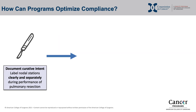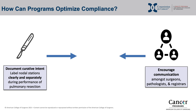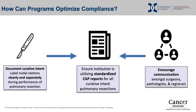In summary, to improve compliance with Standard 5.8, surgeons must document curative intent for appropriate pulmonary resections and label nodal stations clearly and separately during performance of the resection. Institutions must encourage communication among surgeons, pathologists, and registrars. These steps will allow the pathologist to properly document findings using standardized CAP reports, increasing compliance with Standard 5.8 and ultimately improving outcomes for patients undergoing curative surgery for pulmonary malignancy.